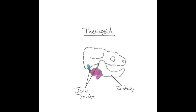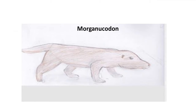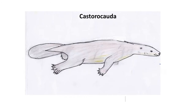Other bones which previously played a role in the lower jaw migrated upwards and are now known as the anvil and hammer of the inner ear. Early Cyanodonts such as Morganucodon and Castorocauda were just some of the first Cyanodonts to exhibit these mammalian traits.